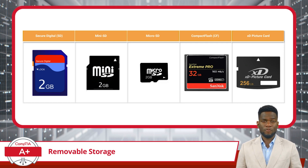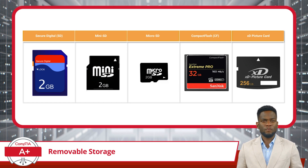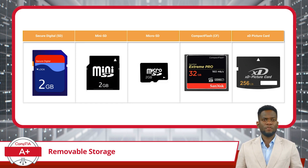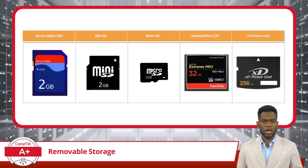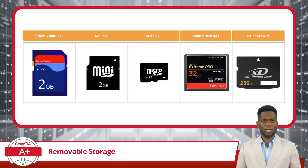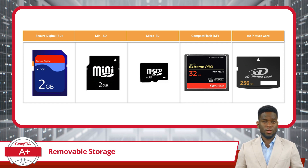SD cards are suitable for storing photos, videos, music, and other multimedia files. Mini SD cards are a smaller variant of the SD card format, designed for use in compact electronic devices where space is limited. While they offer the same functionality as standard SD cards, their smaller size makes them ideal for devices like smartphones and GPS units. However, mini SD cards are less common nowadays as they have largely been supplanted by the even smaller micro SD format.